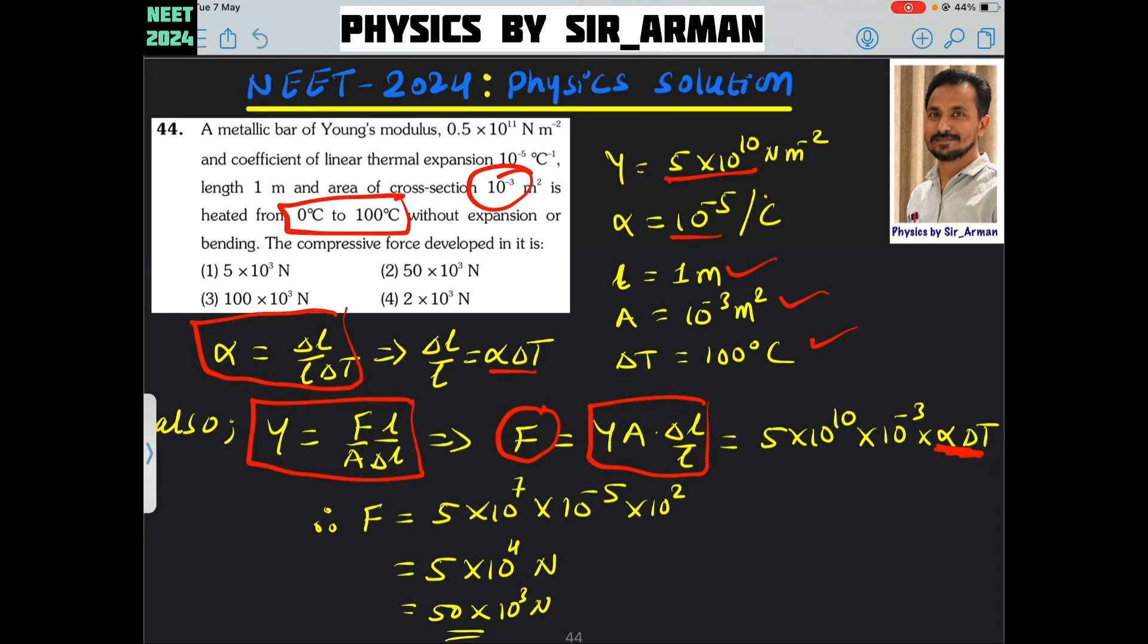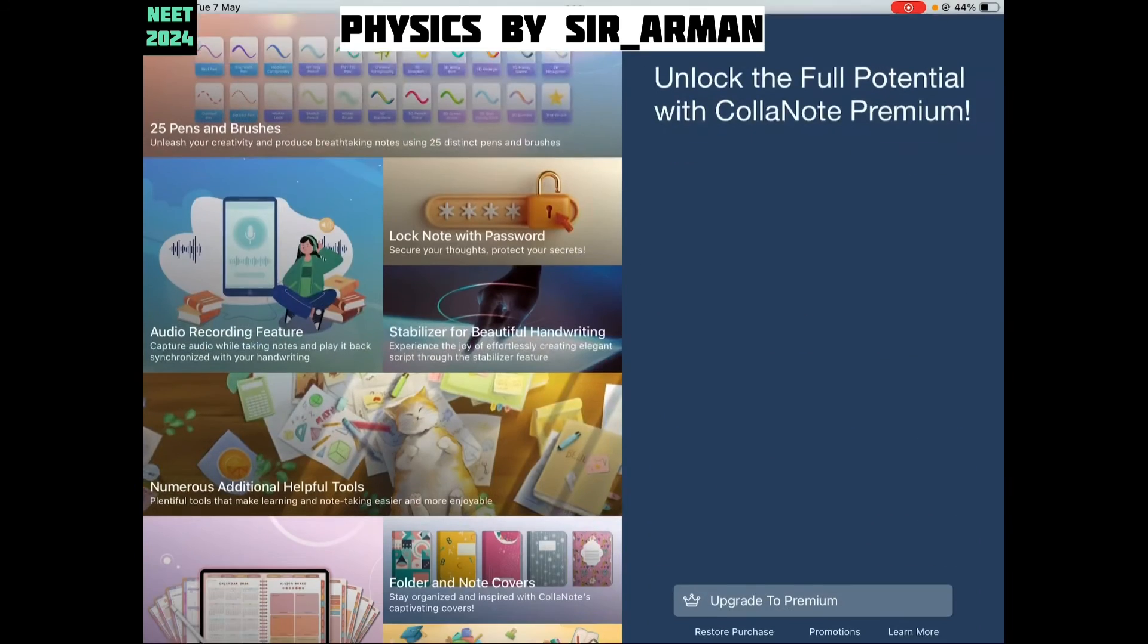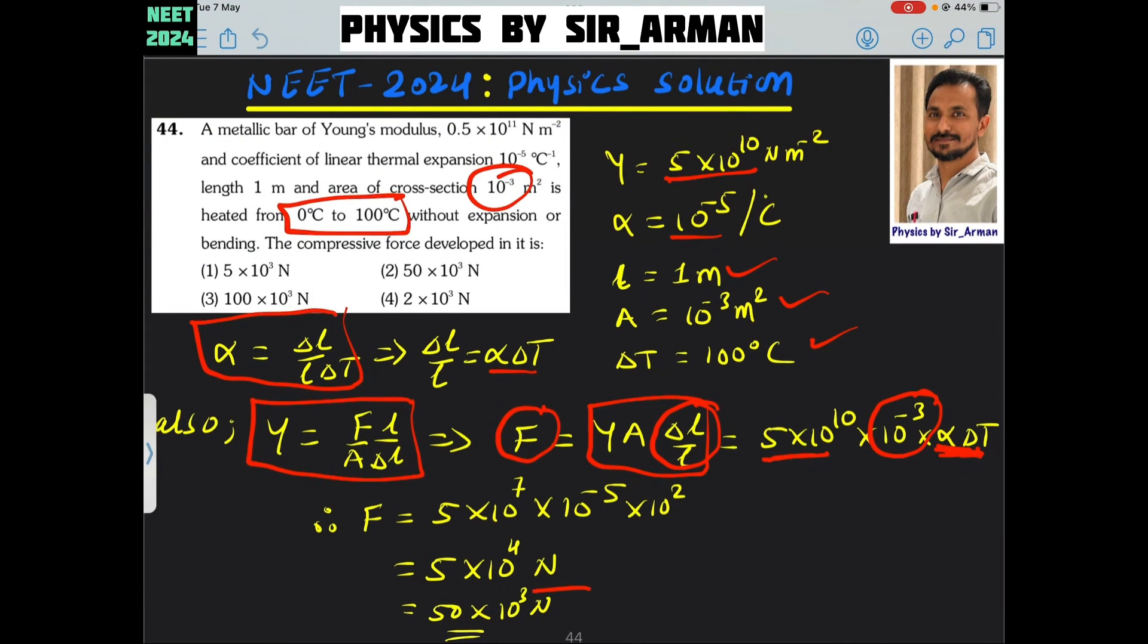Here it becomes alpha delta T that I have placed here. Young's modulus, it is 5 into 10 raised to 10. Area is given 10 raised to minus 3, and the remaining term delta L by L that I have written as alpha delta T. Just putting all the data here, we will get 50 into 10 raised to 3 Newton, which is the correct option.